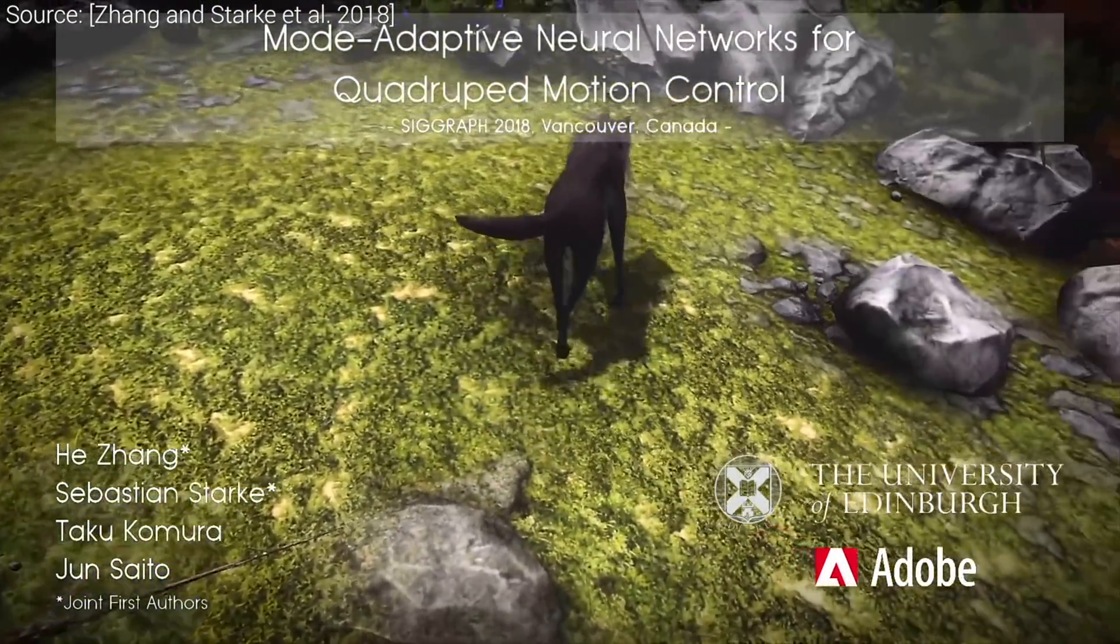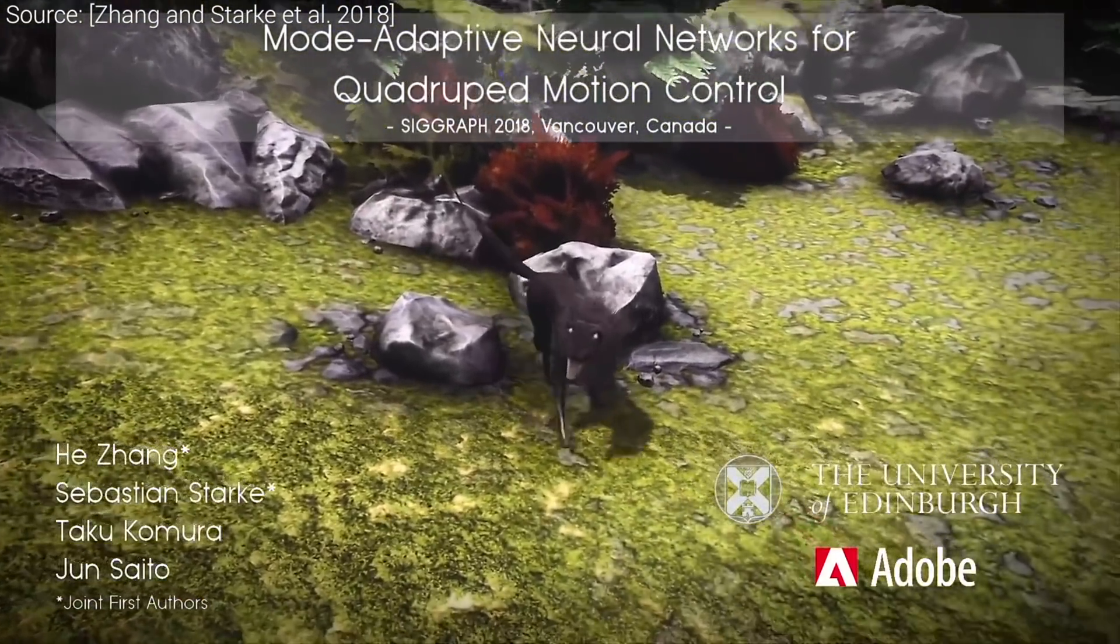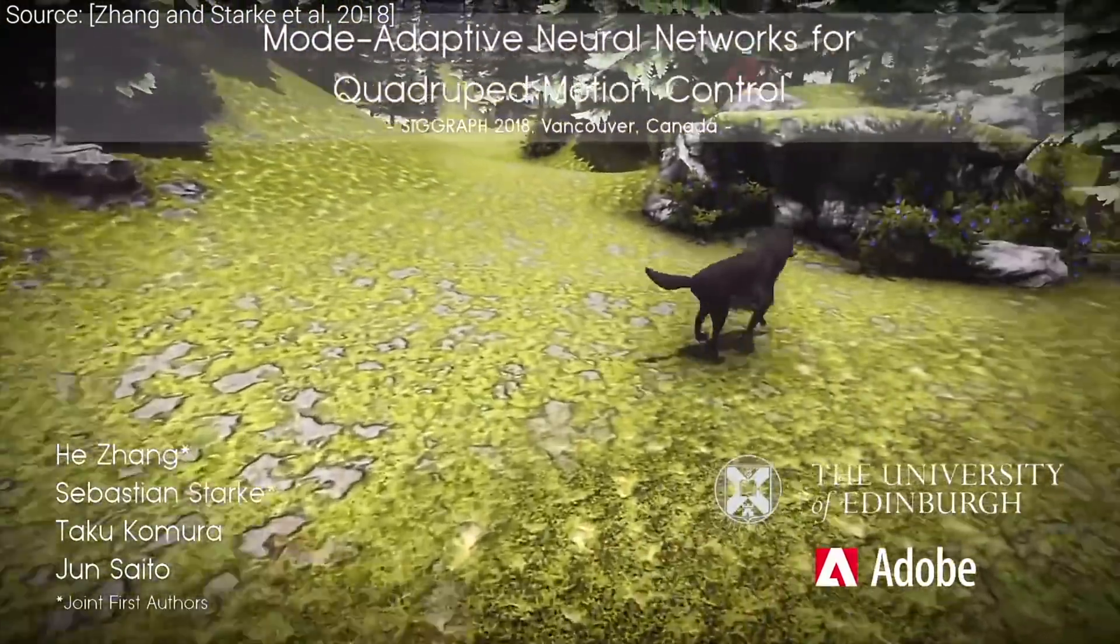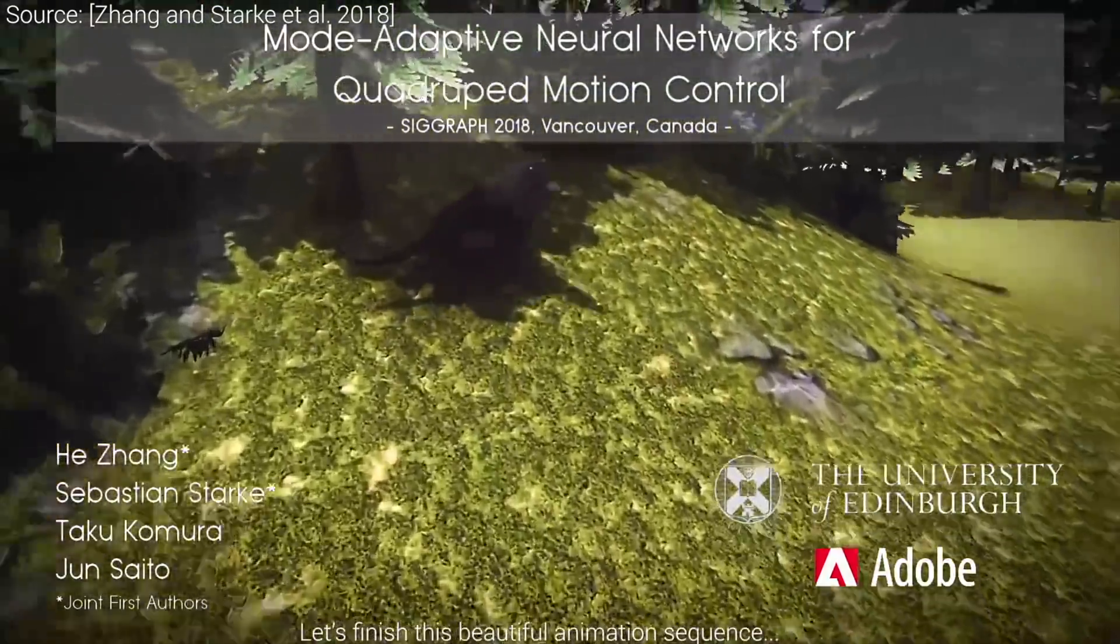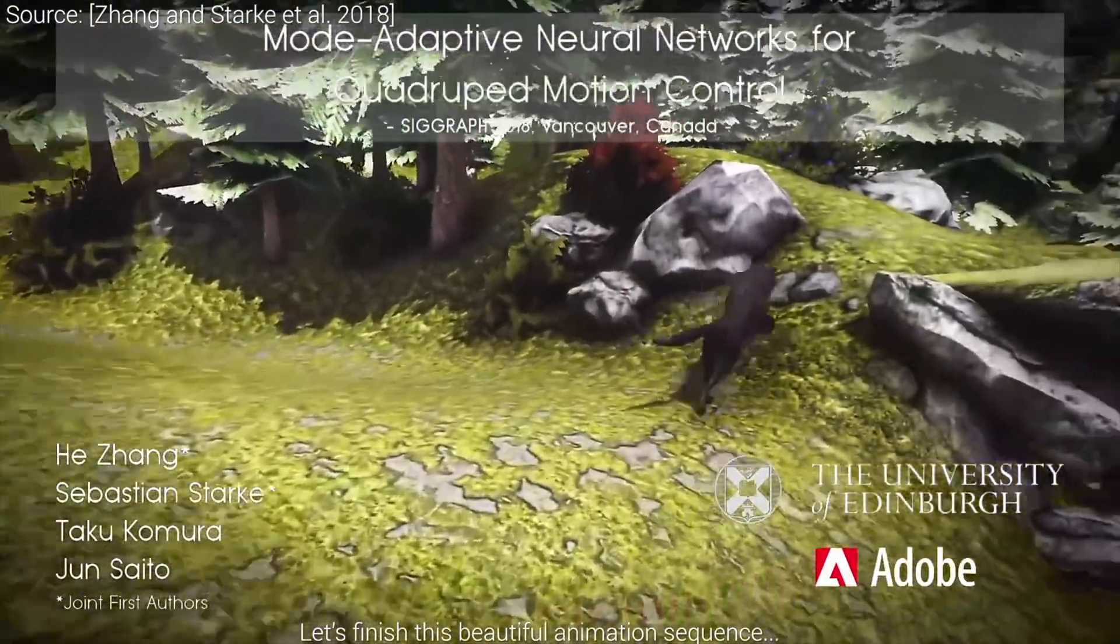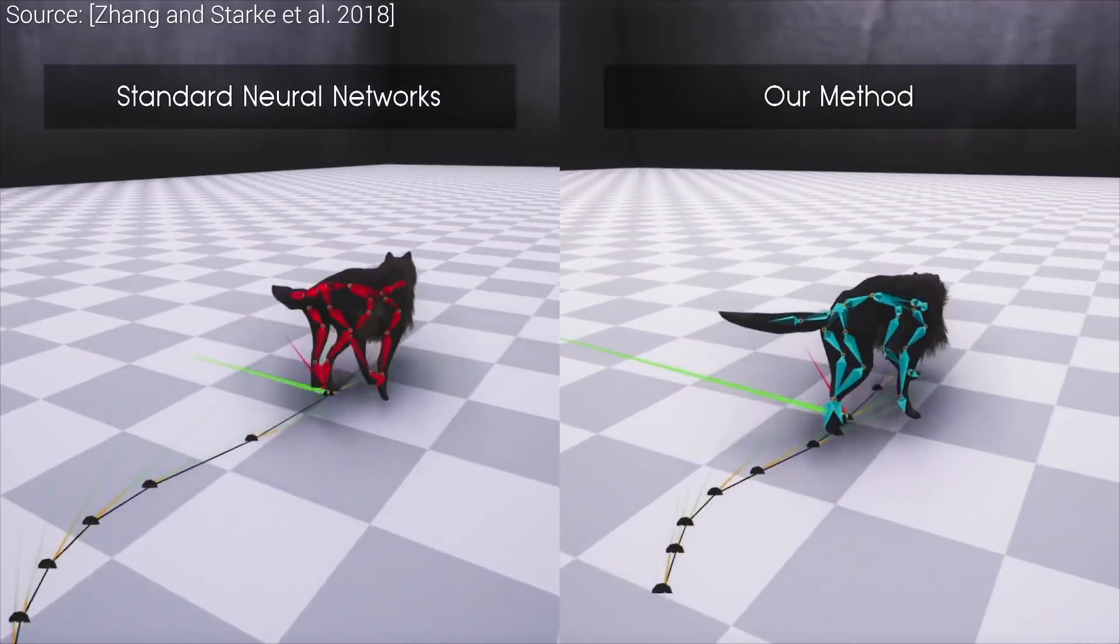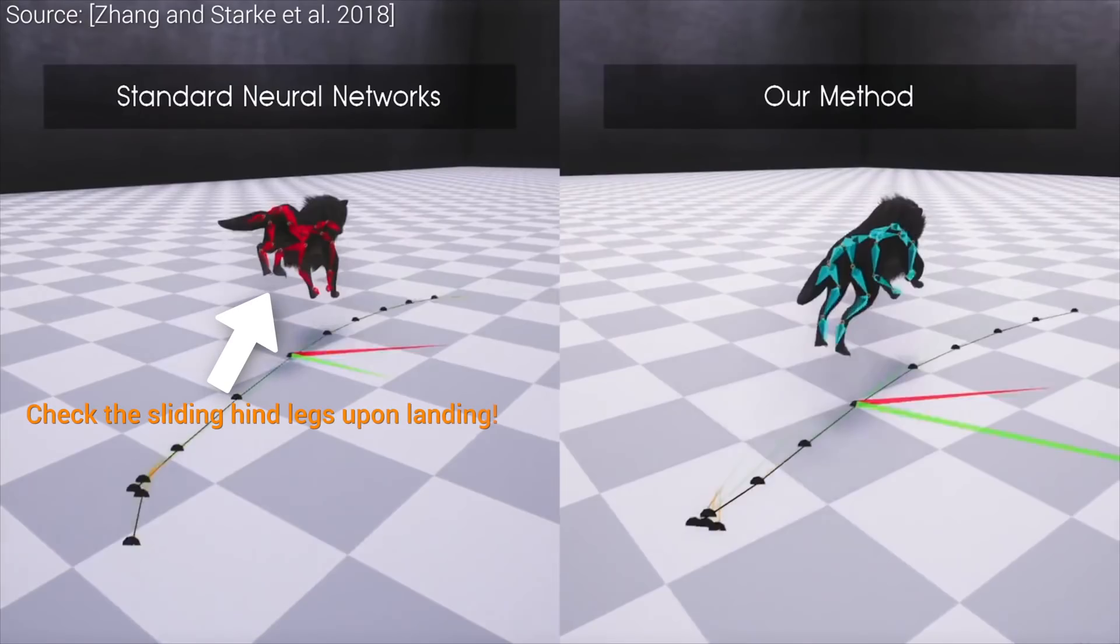Last year, an amazing neural network-based technique appeared that was able to look at a bunch of unlabeled motion data and learned to weave them together to control the motion of quadrupeds, like this wolf here. It was able to successfully address the shortcomings of previous works, for instance, the weird sliding motions have been eliminated, and it was also capable of following some predefined trajectories.